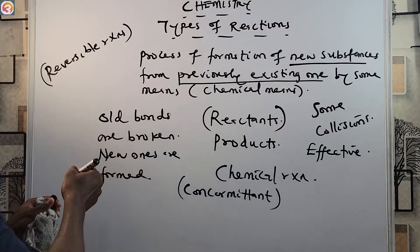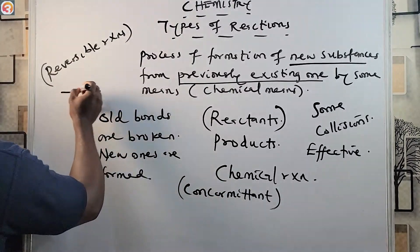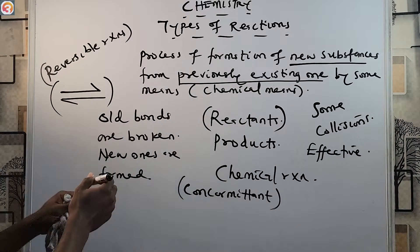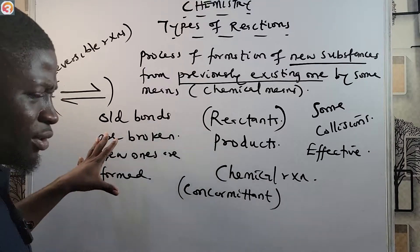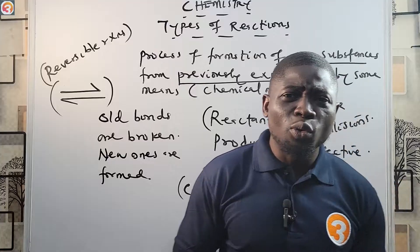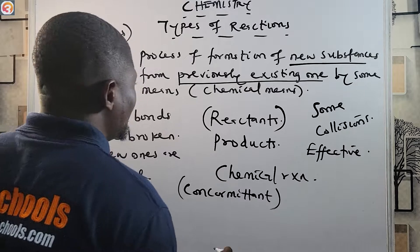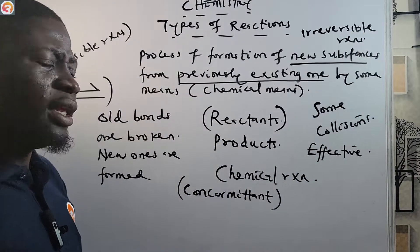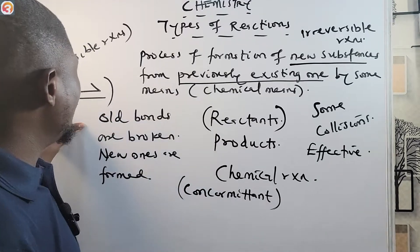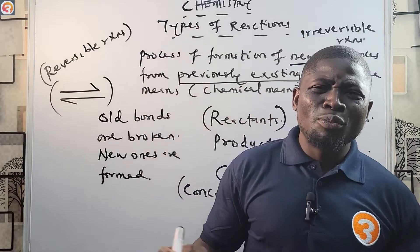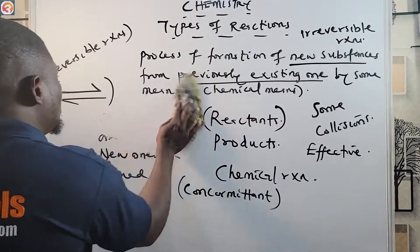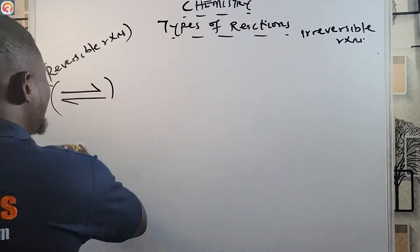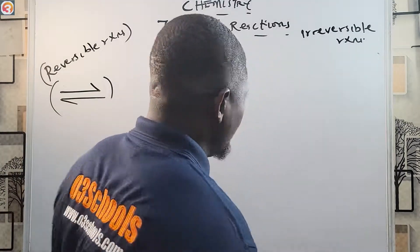Reversible reactions are those that can go in both directions — you will see a symbol with arrows pointing in both directions to represent reversibility. There are also reactions that go in only one direction; we call those irreversible reactions. There are many types of reactions we are going to consider, and we will take them one after the other, with full understanding and elucidation in the next episodes.